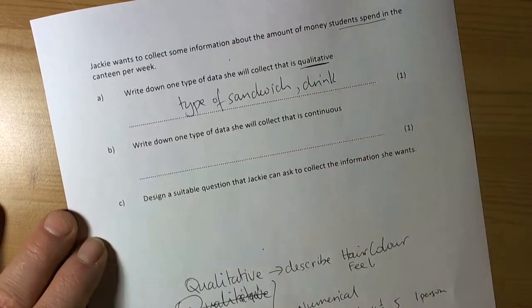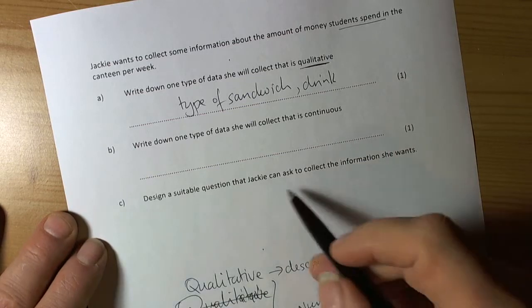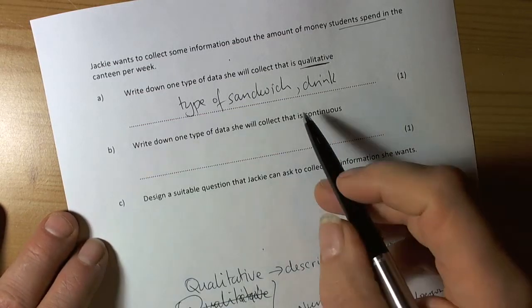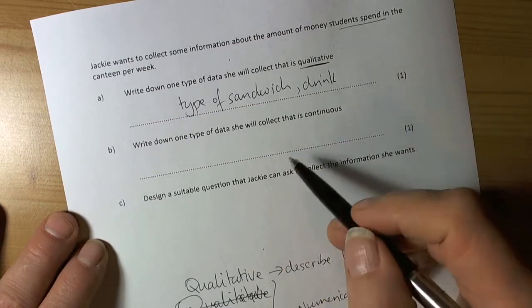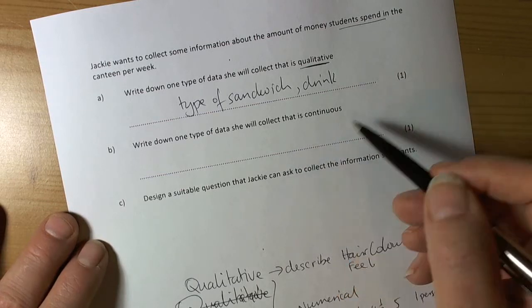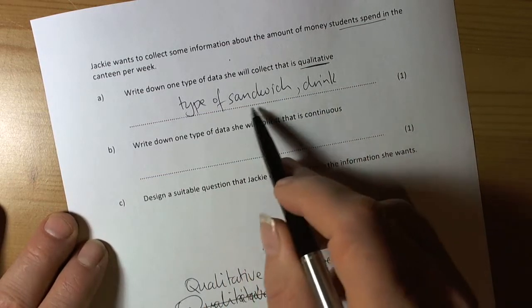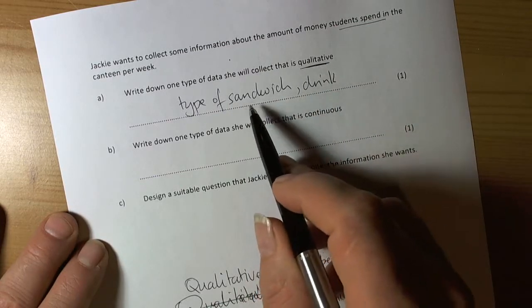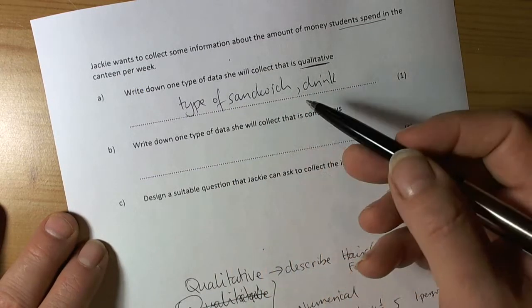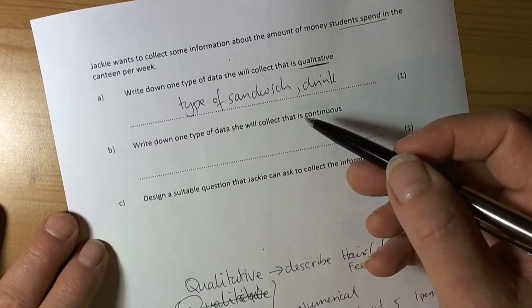It's about what they spend money on. She might be wanting to find out - do people buy sandwiches most, do they buy drinks most, do they buy hot food. Those are examples of things that would be qualitative. The type of sandwich - whether it's a cheese sandwich, an egg sandwich, all those kind of things.